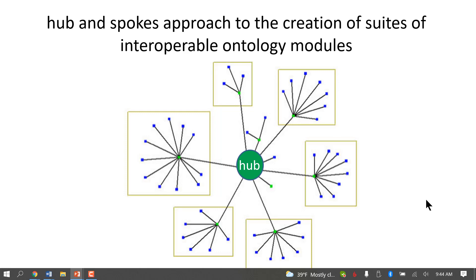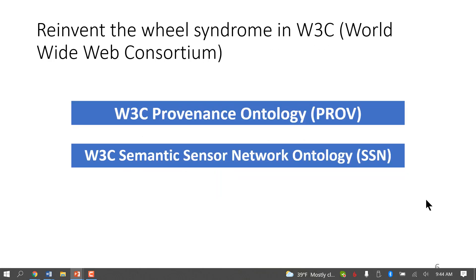And then they have spokes descending from those spokes. The idea is that because they all share a common hub, they have a common starting point for definitions using very general words like 'object,' 'process,' 'part of,' and so forth. W3C, however, did not mandate a top-level ontology.